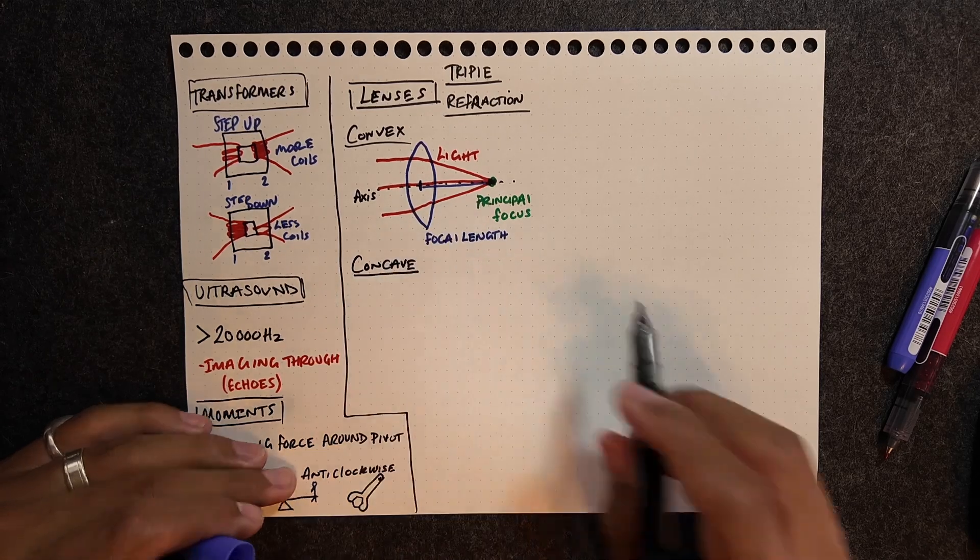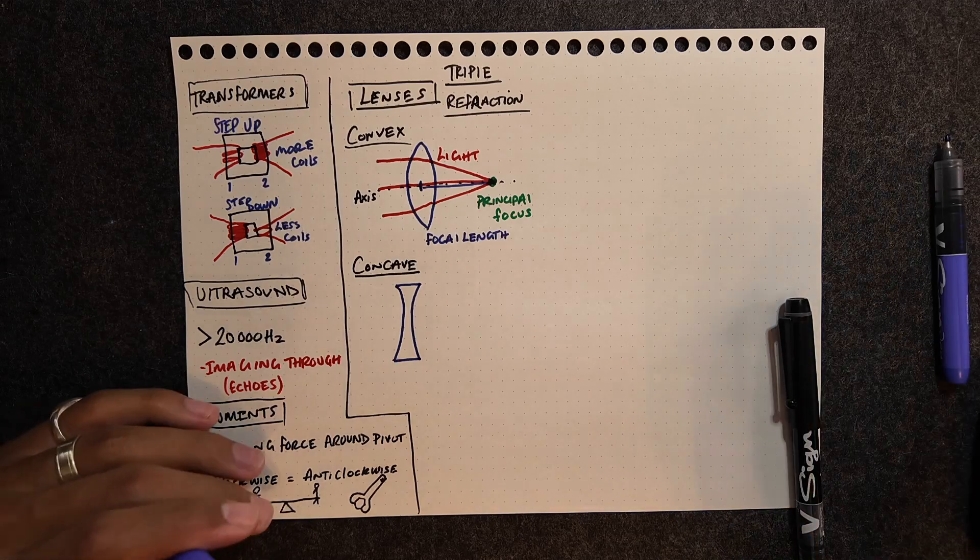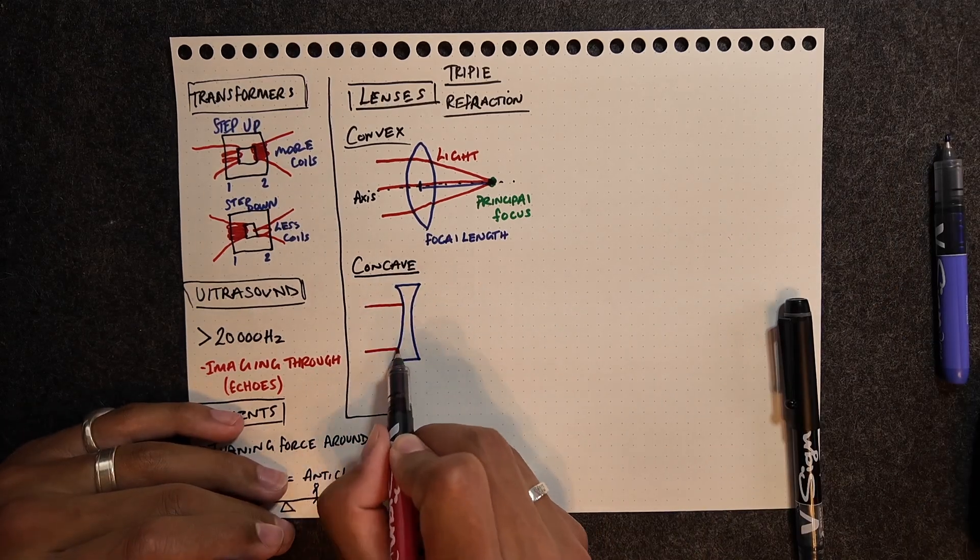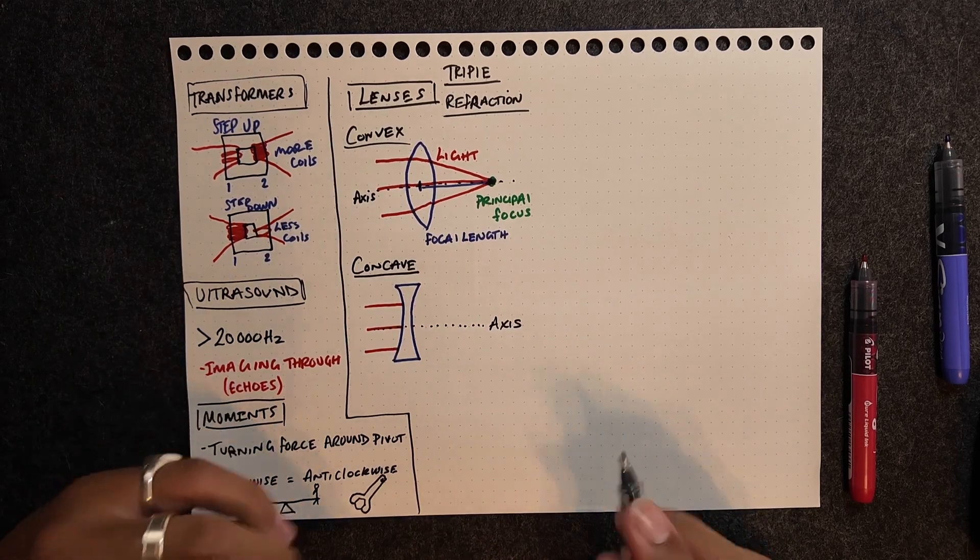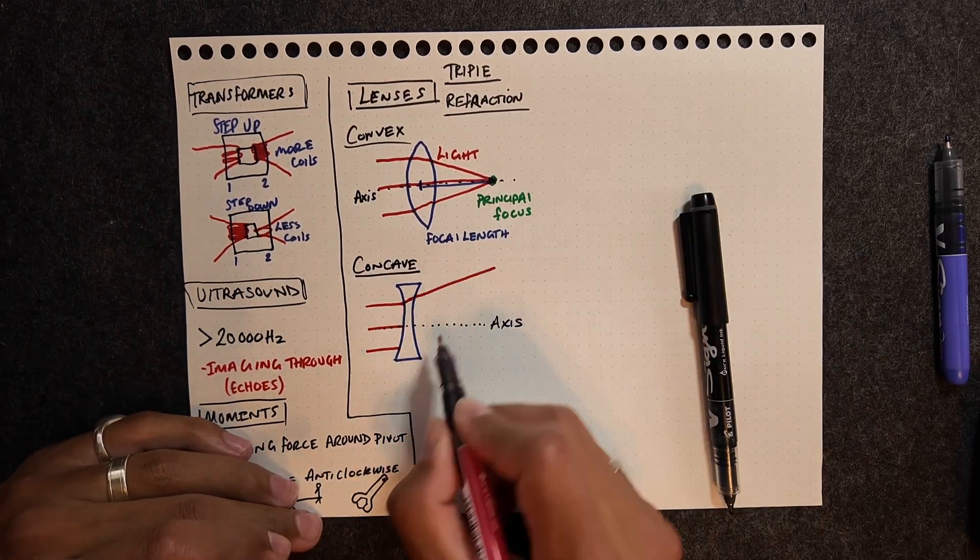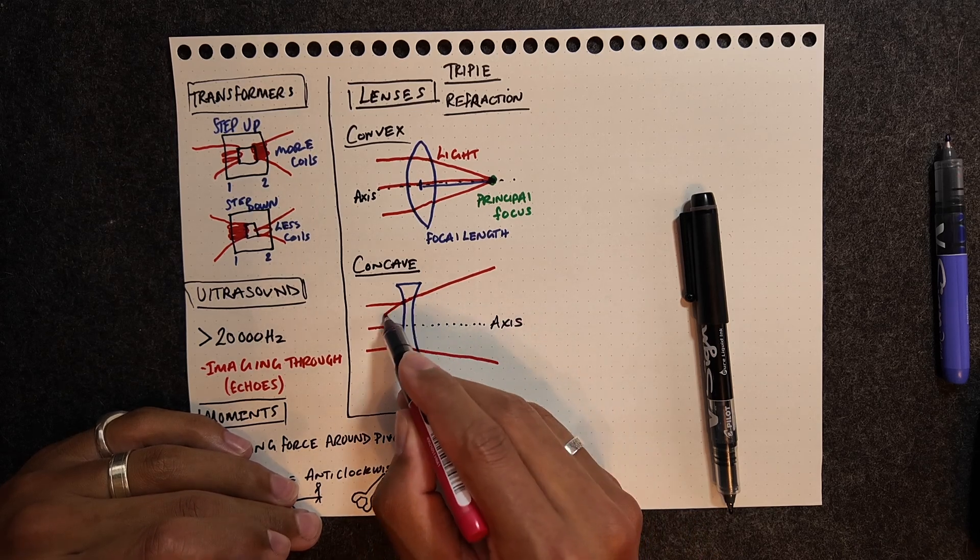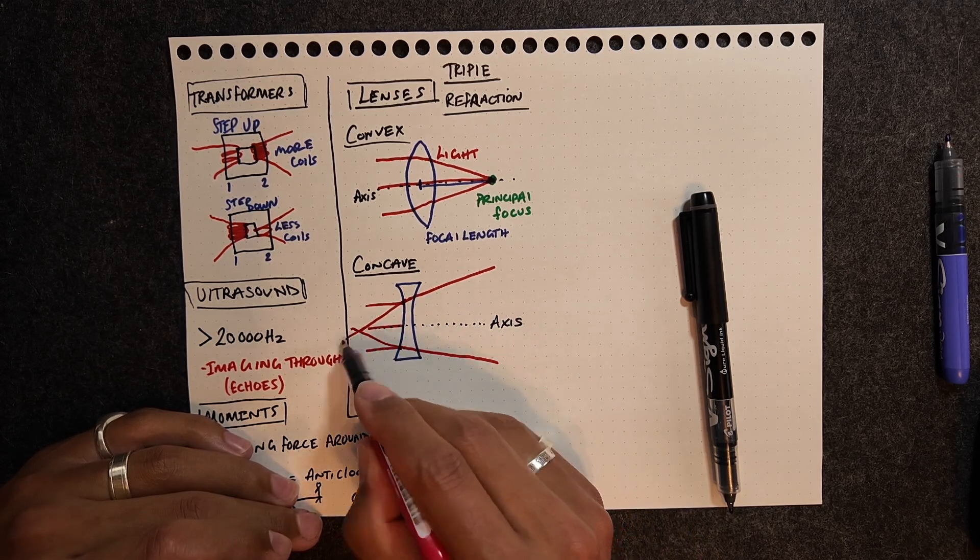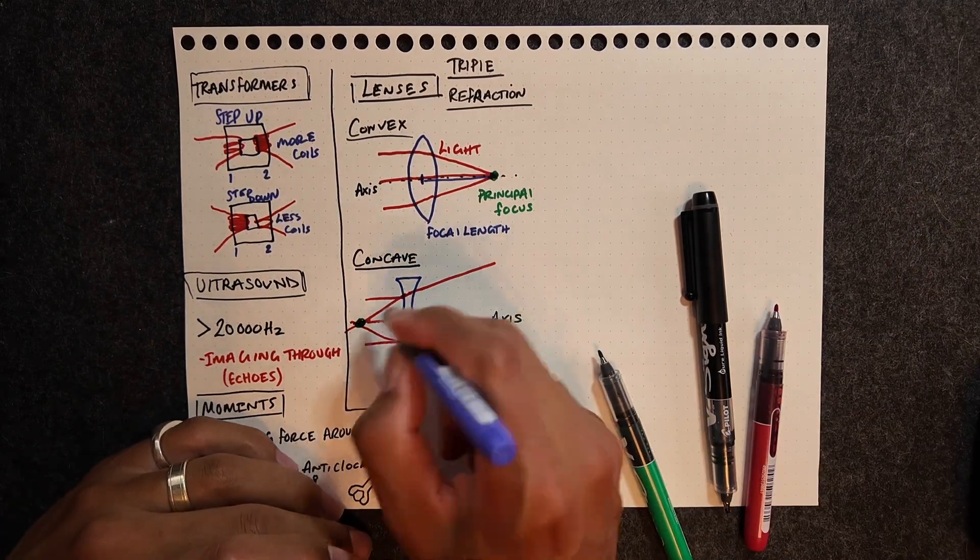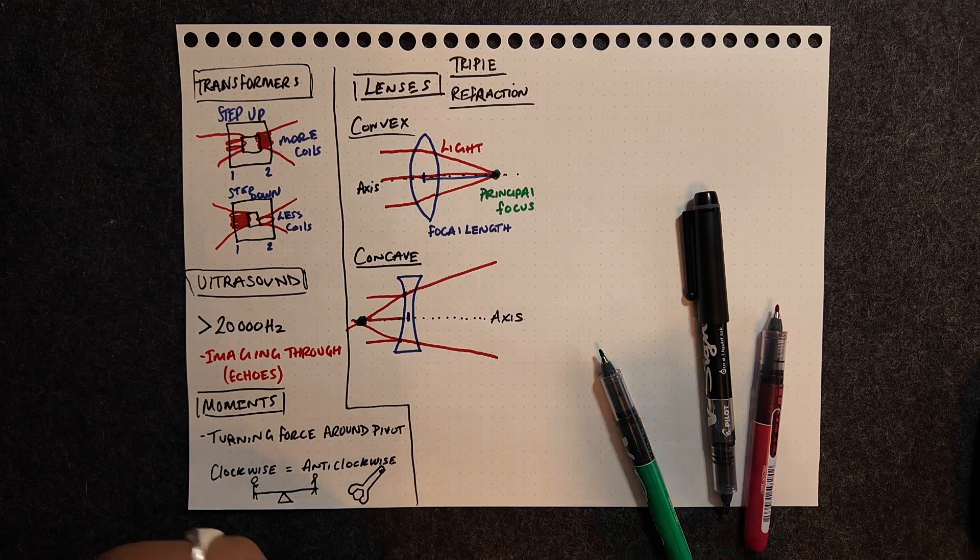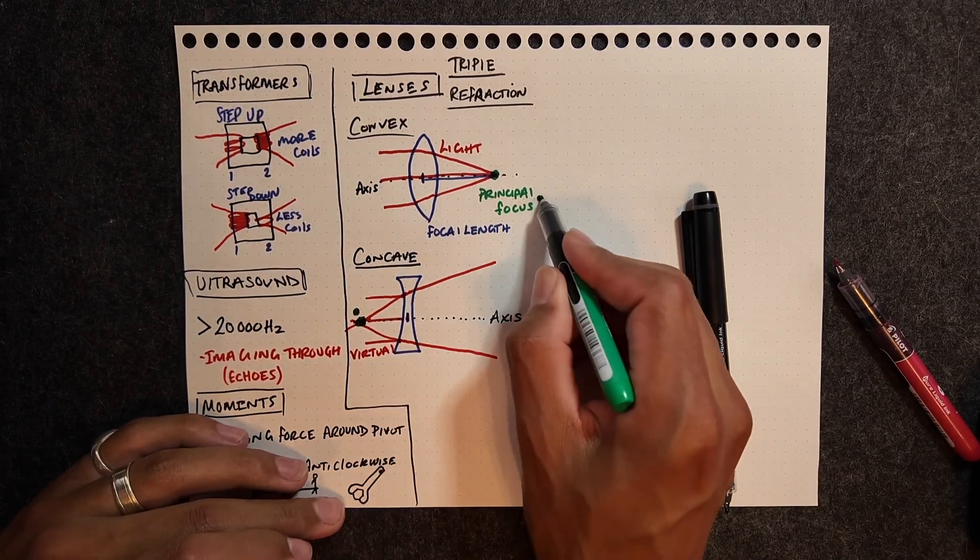Next is the concave lens. Concave lenses are diverging lenses, so it will spread light rays apart and are often used in glasses for people who are short-sighted. Here we have the axis, the light rays going through, diverging as they come out. That means that we're going to have our principal focus here. That distance there is again the focal length. We'll end up with a virtual image there.